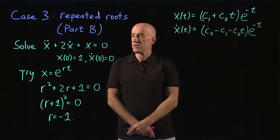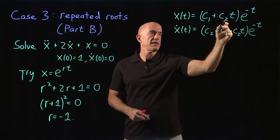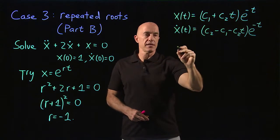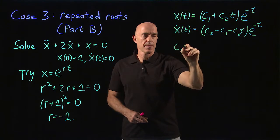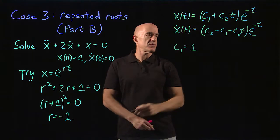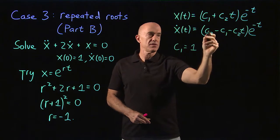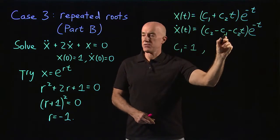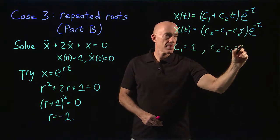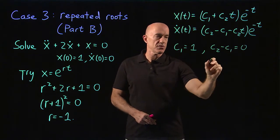Then we put in the initial conditions. x of 0 equals 1, c2t will be 0, e to the 0 is 1, so we get c1 equals 1. From x of 0 equals 1, and x dot of 0 equals 0, e to the minus t is 1, c2t is 0, so c2 minus c1 is supposed to equal 0. That tells us if c1 equals 1, then c2 is also equal to 1.